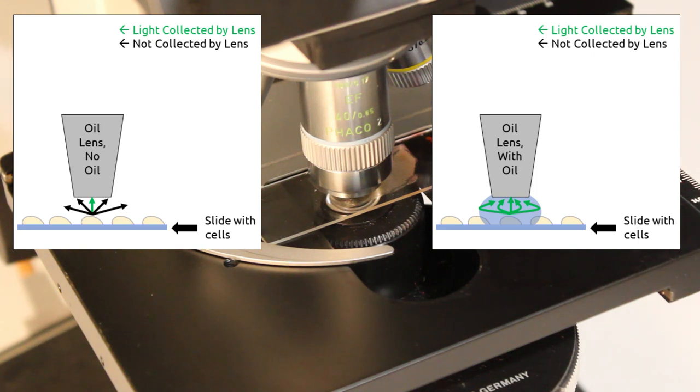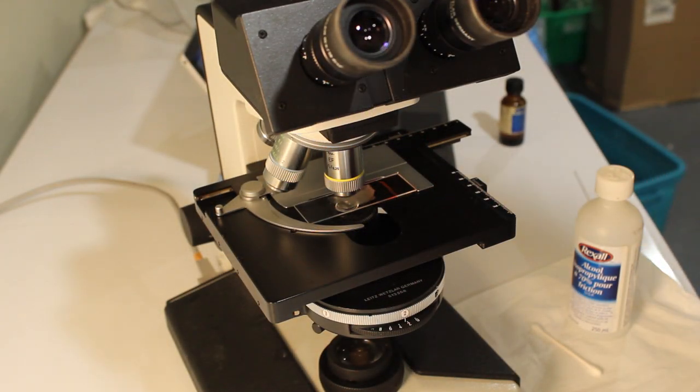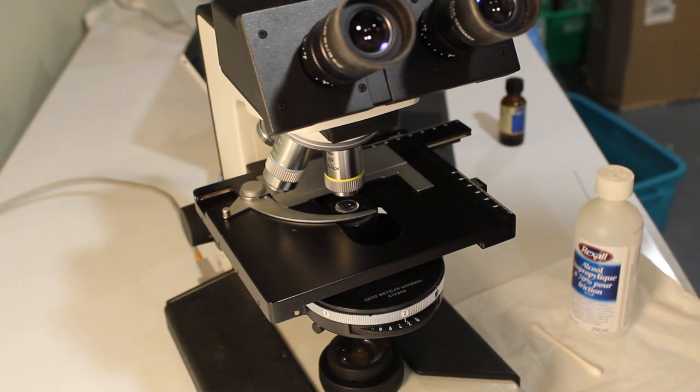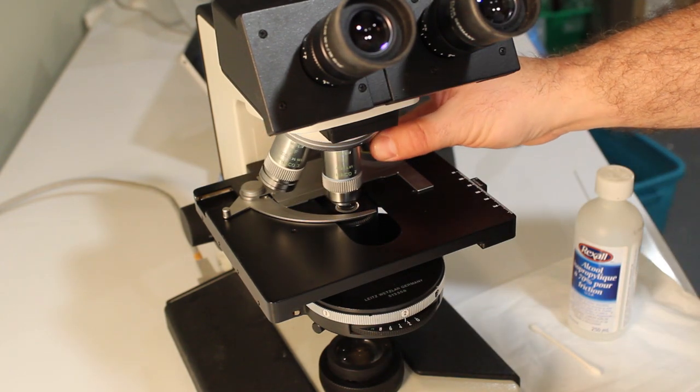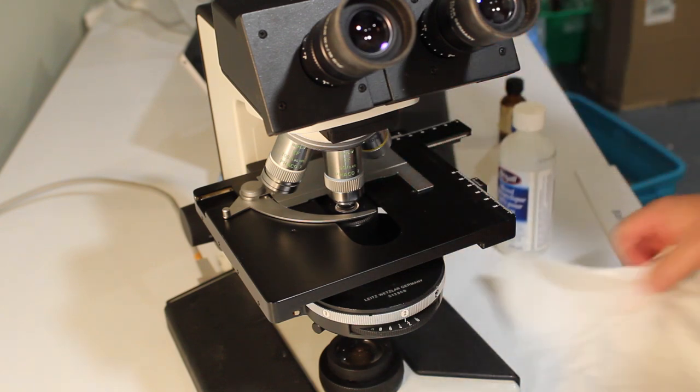If you do happen to contaminate an air lens with oil, it is critical that you immediately clean that lens. The first thing you want to do is remove your sample from the microscope so that you don't contaminate any of your other lenses, and then turn your contaminated lens to a position where you can easily access it.